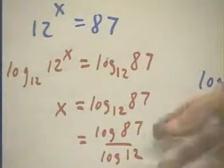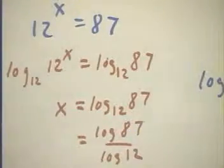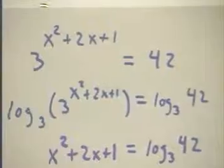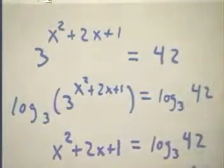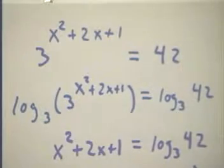And we can punch this into our calculator and get the solution. Okay, now the second quiz problem was to solve 3 to the x squared plus 2x plus 1 equals 42. What do we do here?